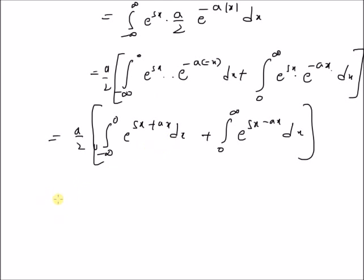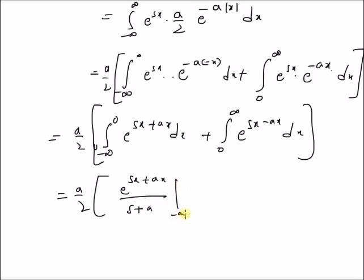This integration is very straightforward. The first term equals (a/2) times e to the power of (s+a)x divided by (s+a), evaluated from minus infinity to zero. The second term is e to the power of negative (a−s)x divided by (s−a), evaluated from zero to infinity.